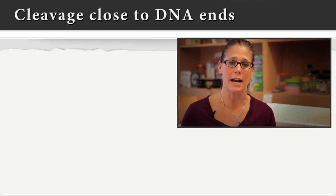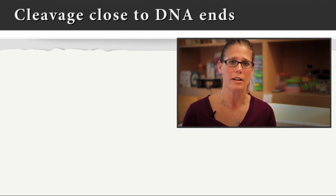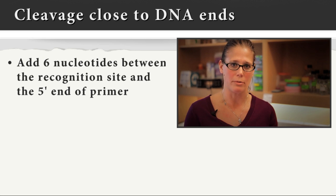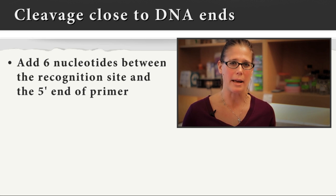For example, if you're designing a primer containing a restriction site, we recommend as a rule of thumb adding six nucleotides between the recognition site and the five-prime end of the primer.